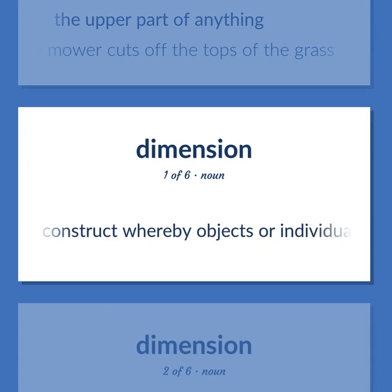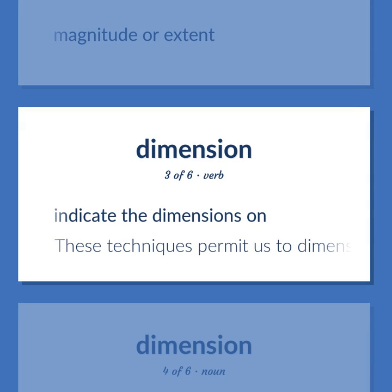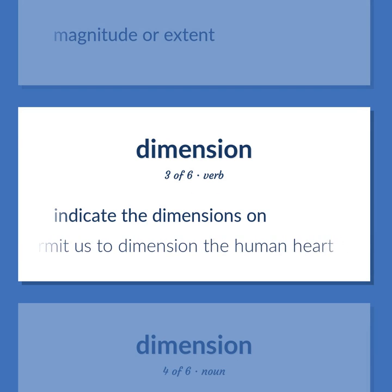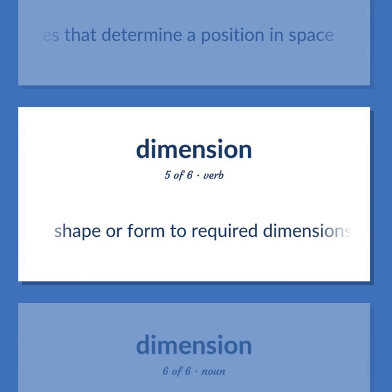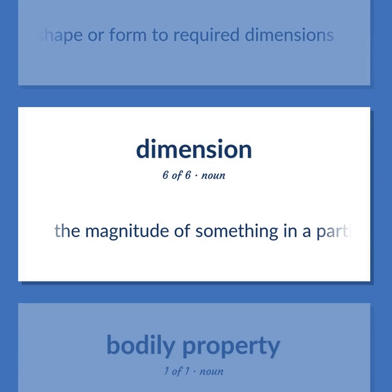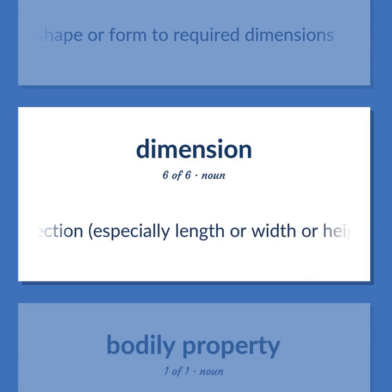Dimension. A construct whereby objects or individuals can be distinguished. Magnitude or extent. Indicate the dimensions on. Example: These techniques permit us to dimension the human heart. One of three Cartesian coordinates that determine a position in space. Shape or form to required dimensions. The magnitude of something in a particular direction, especially length or width or height.